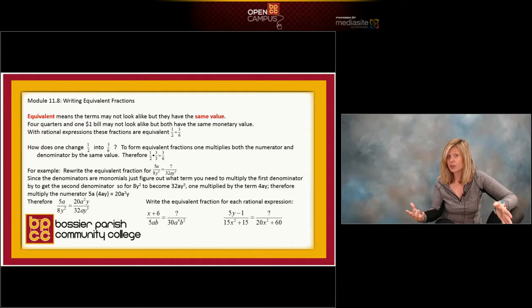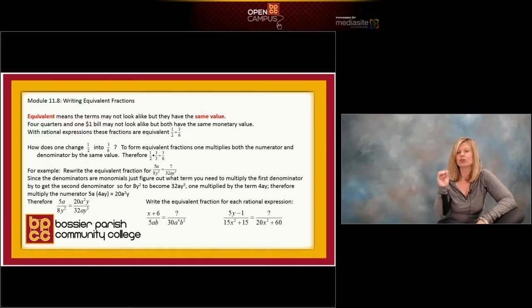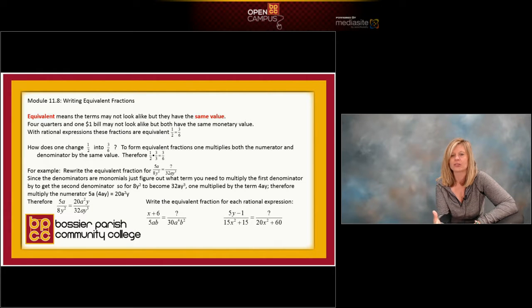And from arithmetic, multiplying any number times one keeps it the same. So look at my algebraic fraction on the slide. I have 5a divided by 8y squared. And I want to make that a fraction that has a new denominator of 32ay cubed. So what's missing right now is the numerator. I'm telling you what my denominator is going to be. But now I've got to figure out what my numerator is.